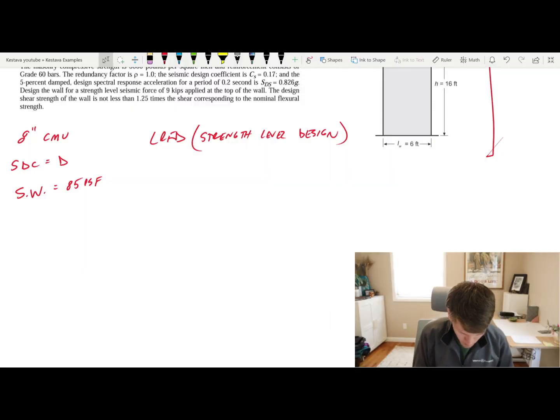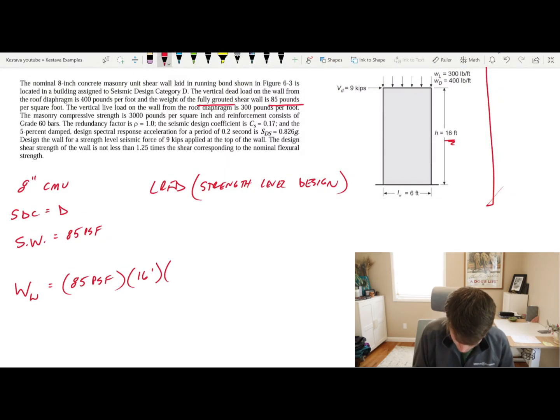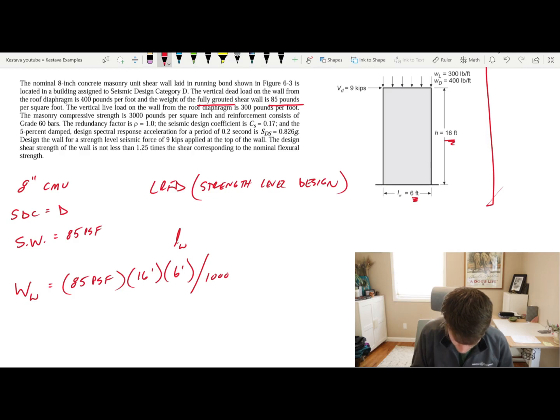First we want to know the self-weight of our entire wall. I'm going to denote that as WW, the weight of wall. That's 85 PSF times a height of 16 feet of wall times the length of wall, which is 6 feet. We'll divide everything by 1,000 to keep it in kips. That's going to equate to 8.16 kips of mass. That's just additional dead load.